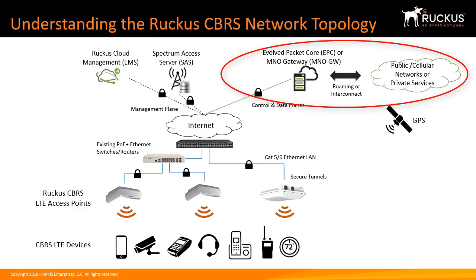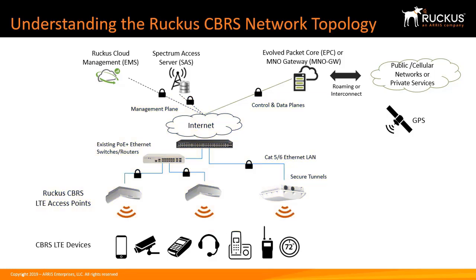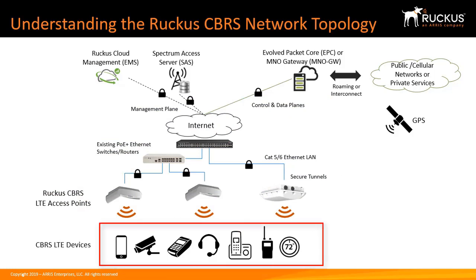The Evolve Packet Core, EPC, is needed to provide LTE services and optionally connect to a cellular network or to private services. The enterprise network is comprised of routers and switches which are connected by Ethernet to Ruckus CBRS LTE access points. The LTE APs are synchronized to GPS satellites for timing. CBRS LTE clients with SIM cards connect to these LTE APs similar to how Wi-Fi clients connect to Wi-Fi APs.